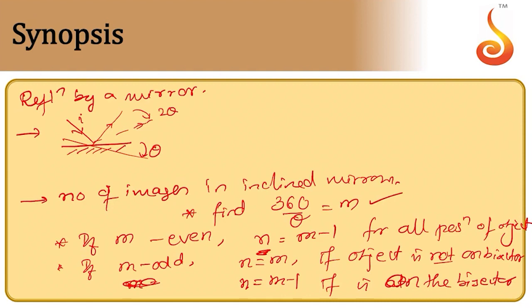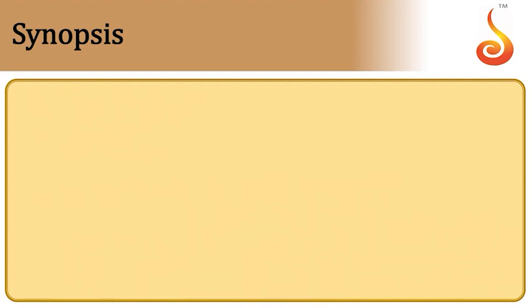If m turns out to be a fraction, then n is the nearest even number. Now consider the idea of paraxial rays — rays which form a very small angle with the axis. All the formulae we discuss here are applicable for paraxial rays only.